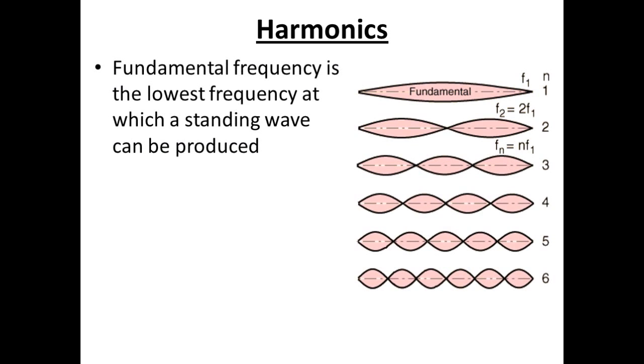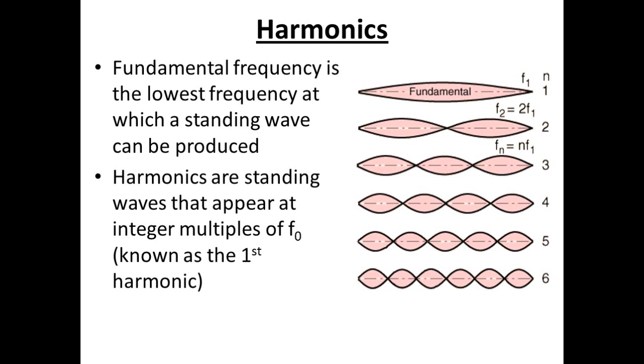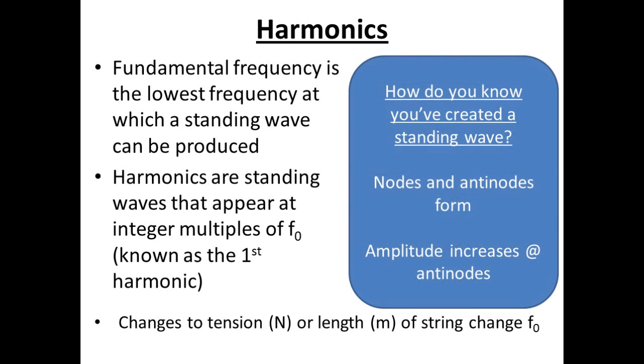The harmonics that will form can be seen in this picture here. The fundamental frequency is the lowest frequency which a standing wave can be produced. And as you increase the frequency, you multiply the fundamental frequency by an integer number, a whole number. So if the fundamental frequency is 200 Hz, the second harmonic will be found at 400 Hz. If you change the tension of the string or the rope or the length of it, this changes the fundamental frequency. It's kind of like a guitar string. If you tighten it or change the length of it by pressing on the frets, then you change the fundamental frequency.